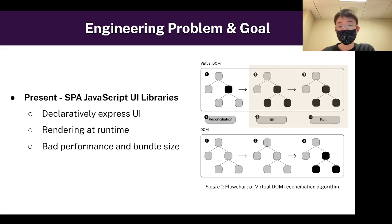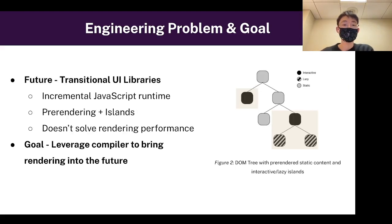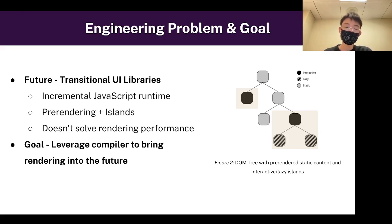In Figure 1, you can see the major bottlenecks with the virtual DOM rendering algorithm, one of the major ways developers render to the web page. In recent months, there has been a trend toward transitional UI libraries. These libraries utilize incremental JavaScript runtime — essentially, JavaScript is only downloaded and executed when you need it.